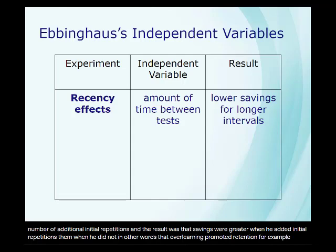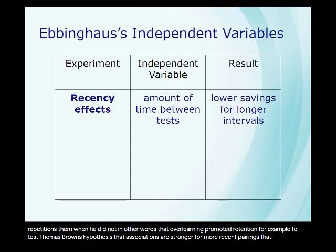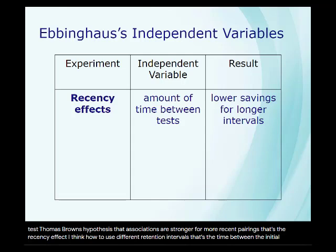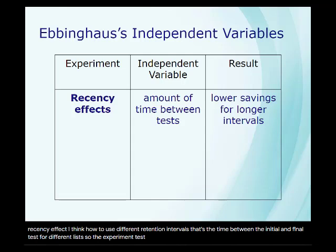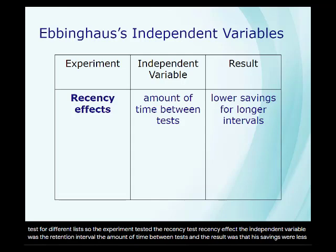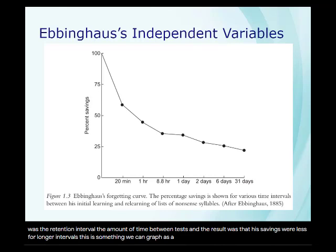Here's another example. To test Thomas Brown's hypothesis that associations are stronger for more recent pairings — that's the recency effect — Ebbinghaus used different retention intervals, that is the time between the initial and final test, for different lists. The independent variable was the retention interval, and the result was that his savings were less for longer intervals. This can be graphed as a forgetting curve.